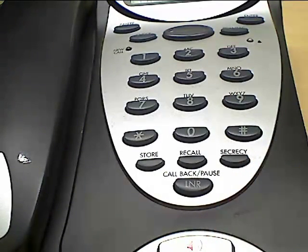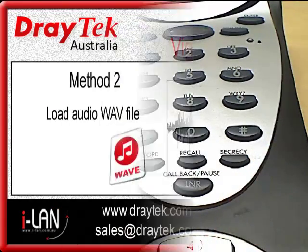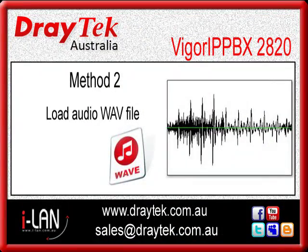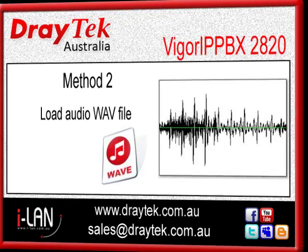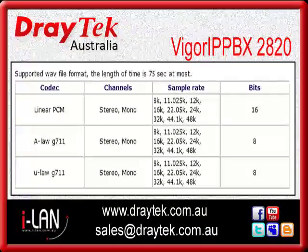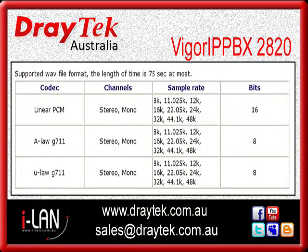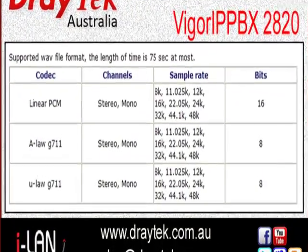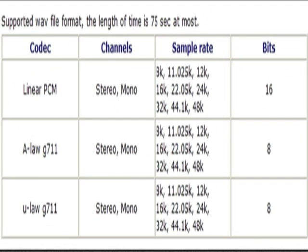Now we will look at the second method to enter the user prompt into the IP PBX. The first step is to record an audio WAV file on your computer in the file format as shown here. For user prompt 5, the file name to use is as shown here.